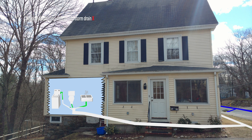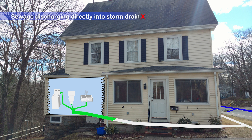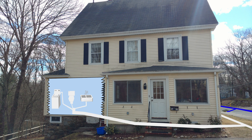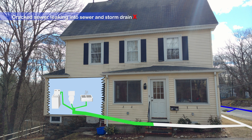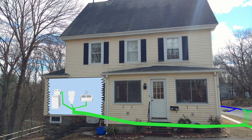The dye test will allow the crew to determine which system your building connects to. It will also show if there are infrastructural issues with the pipes leaving your building or in the street.